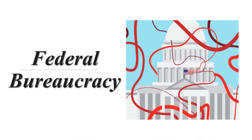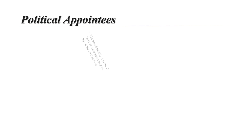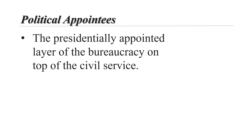Welcome to Lecture 4 of the Federal Bureaucracy. At the highest levels of government agencies are the political appointees — the presidentially appointed layer of bureaucracy on top of the civil service. Appointees fill posts as cabinet secretaries and assistant secretaries, and are essentially not part of the civil service. Of the 4,000-some appointees, just over about 1,000 require Senate confirmation. Many political appointees have ties to the president or the president's party and serve to advance the president's agenda through agency action.